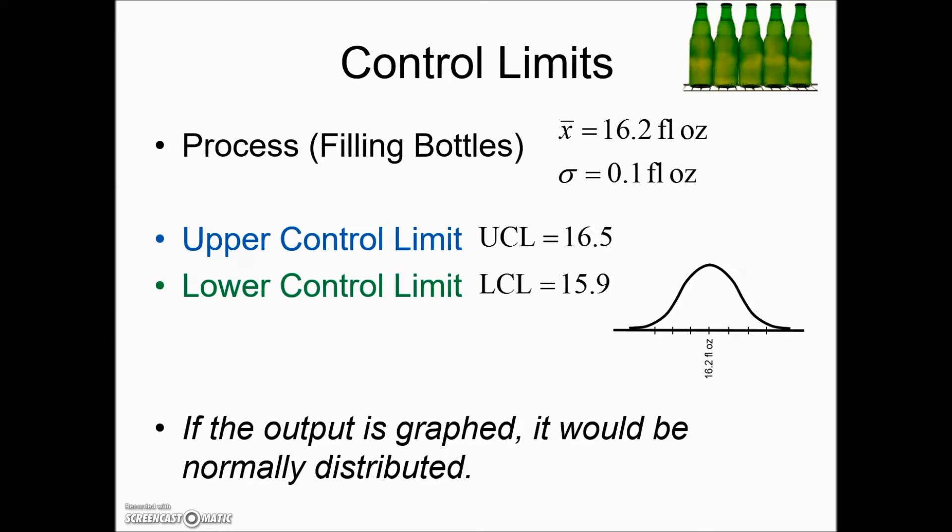And if we fill in the values, the mean would be in the middle, the average 16.2. Going out three standard deviations above, we have our upper control limit and three standard deviations below is our lower control limit. Any values falling within these boundaries is going to be an in control process, virtually all.